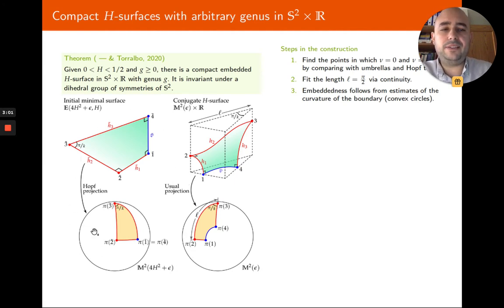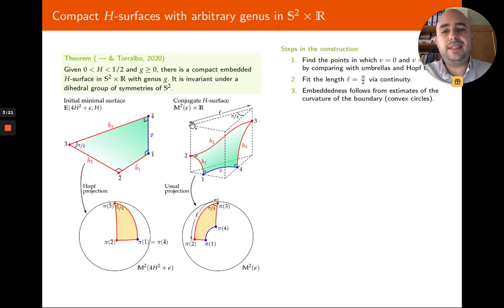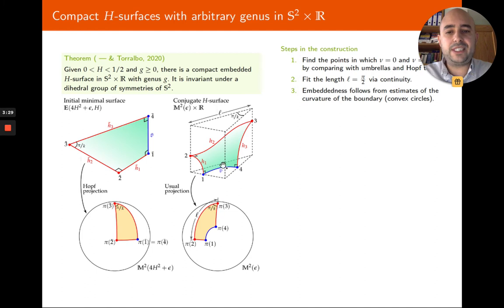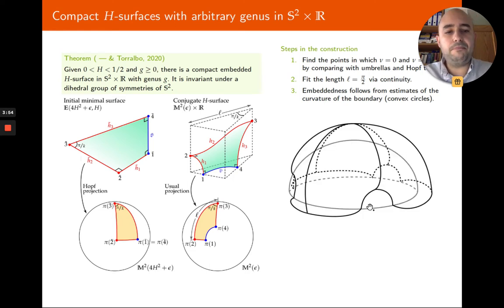There is a degree of freedom: I can enlarge the length of the geodesic h2, and then by means of a continuity argument using Bolzano's theorem, analyzing the different limits, I can arrange that this length L equals pi over 2. Then, after successive reflections of this fundamental piece across the planes spanning the boundary components, I obtain a complete embedded CMC surface, since the original piece is contained in a prism.